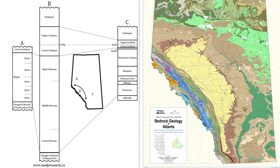Overlying the Wapiti, Briseau, and Battle Formations are the last Cretaceous sediments of Alberta known as the Coal Spur and Schollard Formations. Approximately halfway through the formations you can find the KPG boundary, which represents the end of the Cretaceous and when all the dinosaurs went extinct.